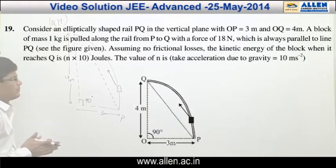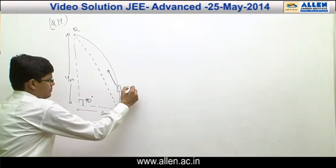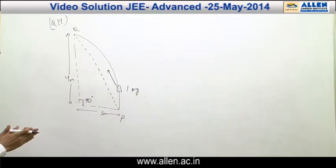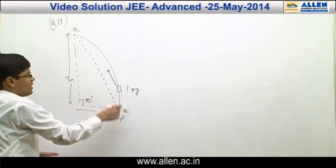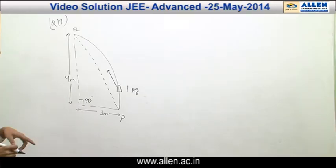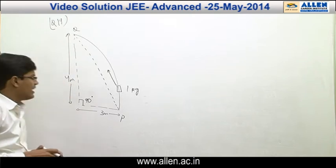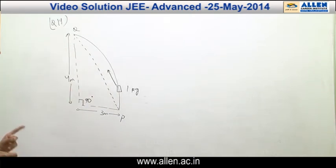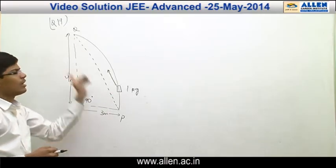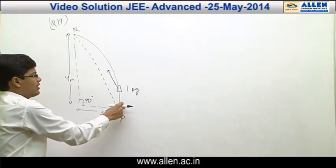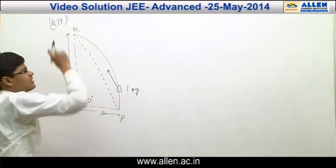Now we discuss question number 19. A block of mass 1 kg is being pulled along the path PQ — an elliptical path — and a force of magnitude 80 newton is acting along the whole length such that the force is always parallel to line PQ. The block starts from rest at P, and we have to calculate its kinetic energy at Q.